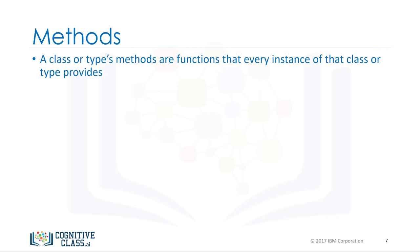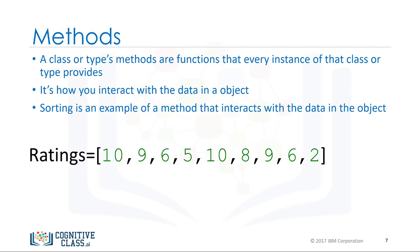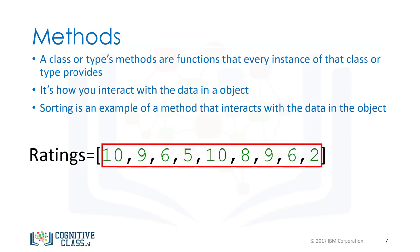A class or type's methods are functions that every instance of that class or type provides — it's how you interact with the object. We have been using methods all this time, for example on lists. Sorting is an example of a method that interacts with the data in the object. Consider the list ratings — the data is a series of numbers contained within the list. The method sort will change the data within the object. We call the method by adding a period at the end of the object's name followed by the method's name with parentheses.